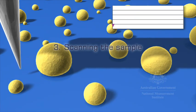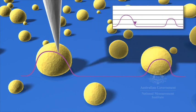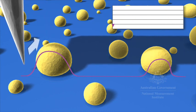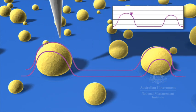3. Scanning the Sample. As the tip is raster scanned across the sample, the tip height is adjusted to keep the cantilever vibration at the set point, and so the tip follows the topography of the sample.